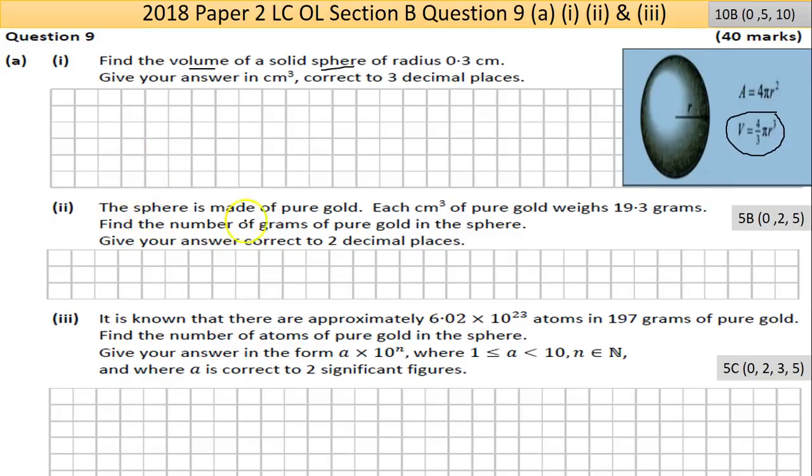Part 2 says the sphere is made of pure gold. Each cm³ of pure gold weighs 19.3 grams. Find the number of grams of pure gold in the sphere, correct to two decimal places. Let's presume that's the sphere, it has a certain volume. You're told that 1 cm³ has 19.3 grams. So what would 0.113 be? It would be less than 19.3.